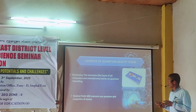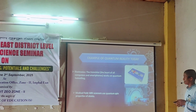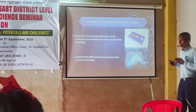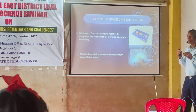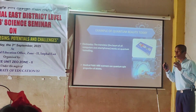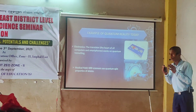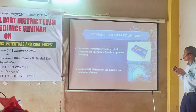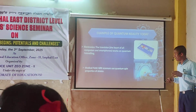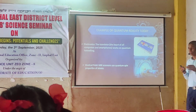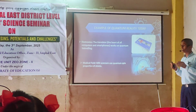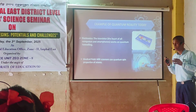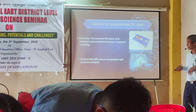Let's look at examples of quantum reality today. First, in electronics, the transistor — the heart of computers and smartphones — controls electron flow at the nanoscale due to quantum tunneling. In the medical field, MRI scanners use quantum properties of atomic spin for advanced imaging.